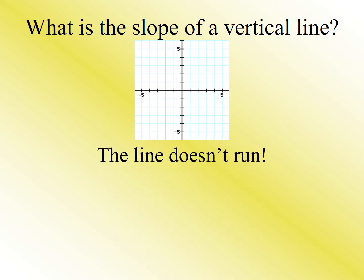What about the opposite? The line doesn't have a run. That means our bottom number is zero. If you take any number and divide by zero, your calculator will say error. It'll say undefined.